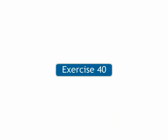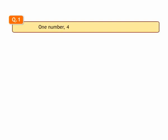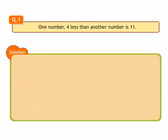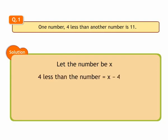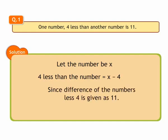Write in the form of equations. 1. One number, 4 less than another number is 11. Let us assume the unknown number to be x. We can write 4 less than the number as x minus 4. It is given that 4 less than another number is 11, which gives x minus 4 is equal to 11. Hence, we get an equation as x minus 4 is equal to 11.